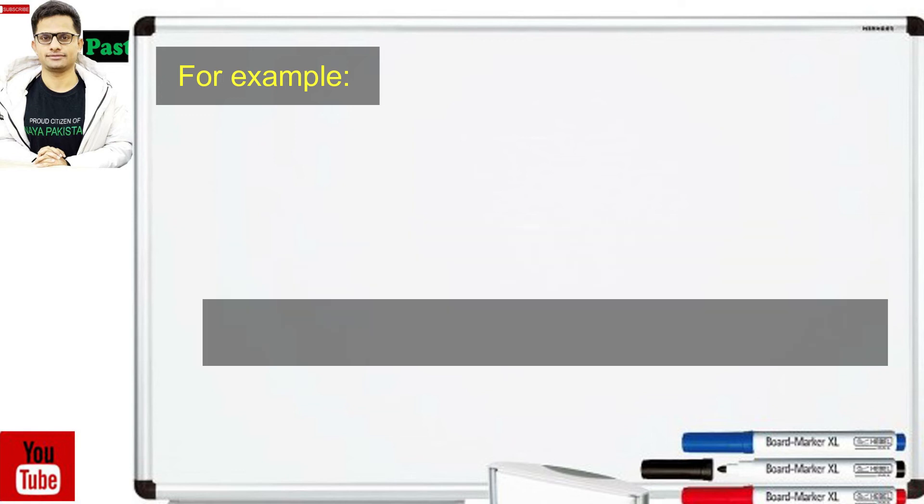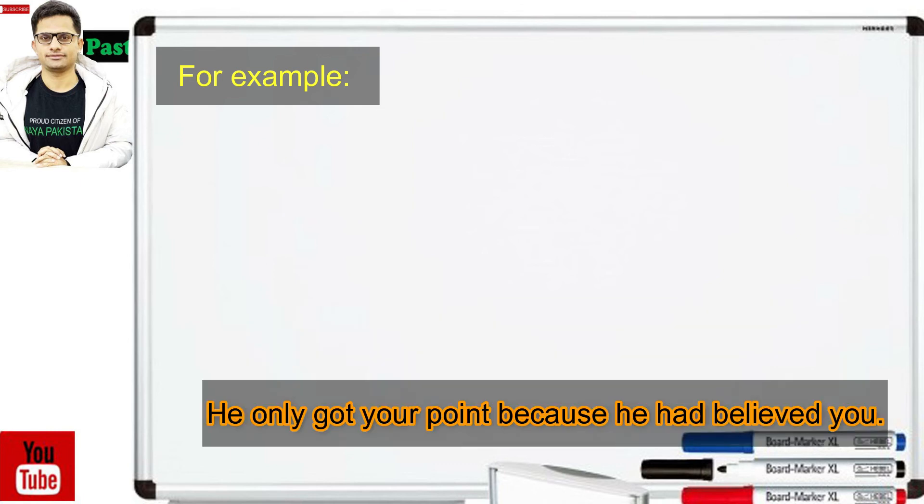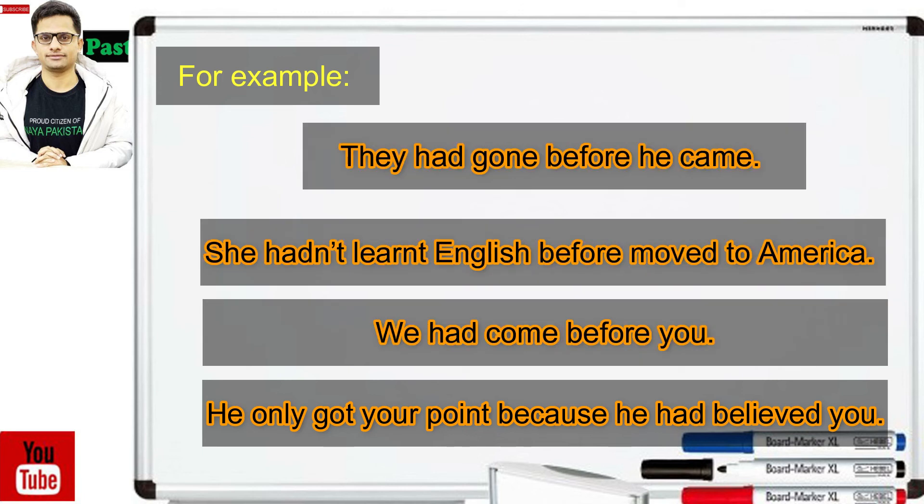Next sentence: we had come before you. ہم آپ سے پہلے آ چکے تھے. Last example sentence: he only got your point because he had believed you. وہ صرف آپ کی بات سمجھ گیا کیونکہ وہ آپ پر یقین کر چکا تھا. He only got your point یہ جو sentence ہے یہ first action ہے یعنی وہ صرف آپ کی بات سمجھ گیا کیونکہ وہ آپ پر یقین کر چکا تھا یہ جو ہے یہ second action ہے.